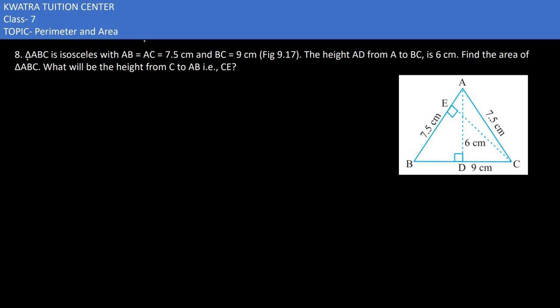In the 8th part, triangle ABC is isosceles, meaning two sides are equal. We can understand AB is 7.5 and AC is also 7.5. Then they are saying height AD from A to BC - this height AD is perpendicular to BC - is 6 centimeters.